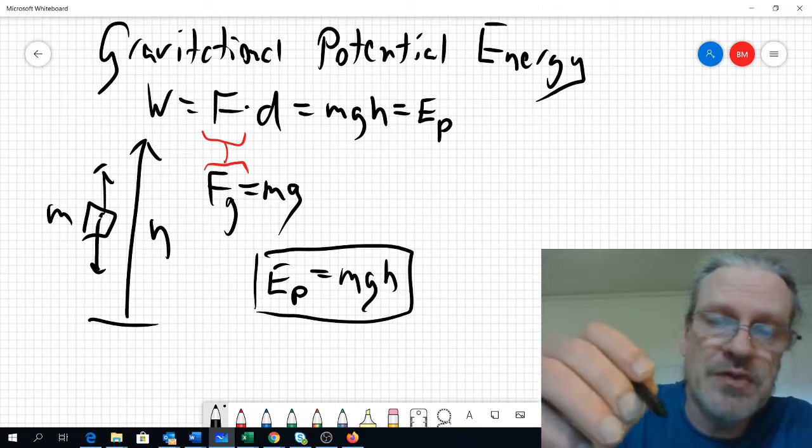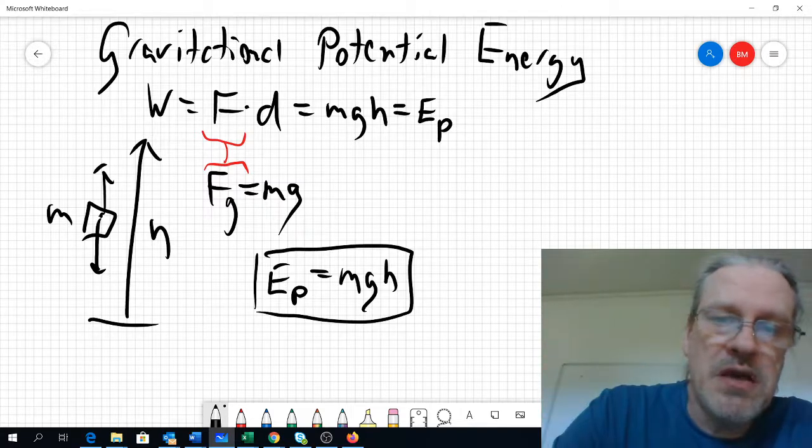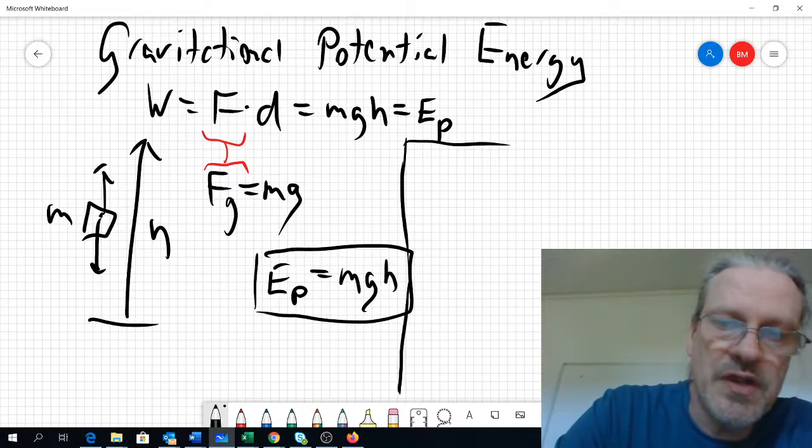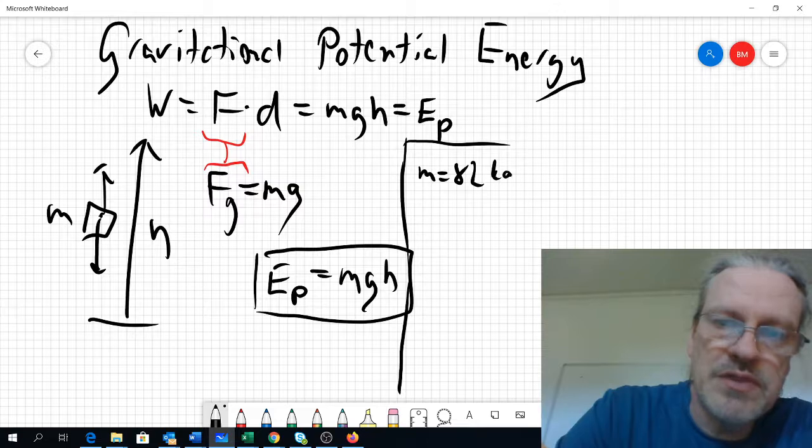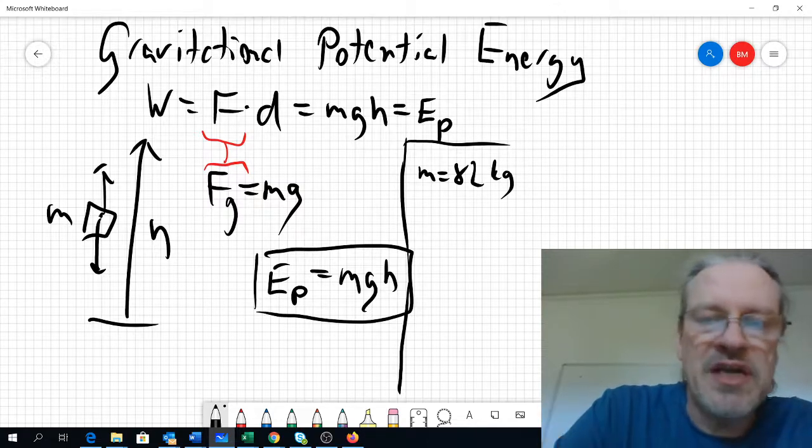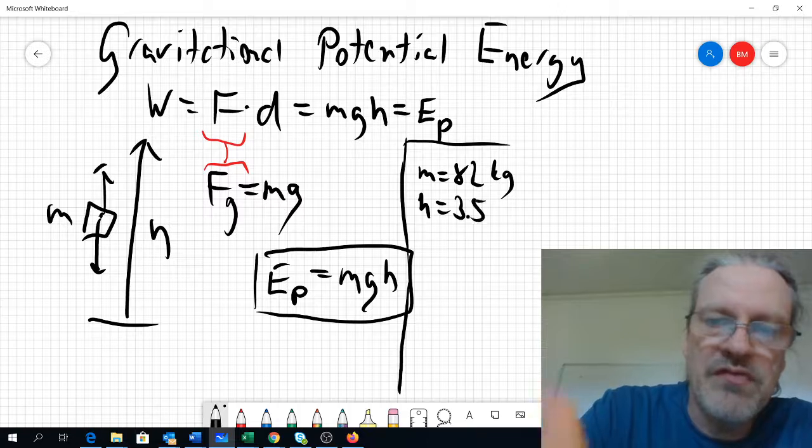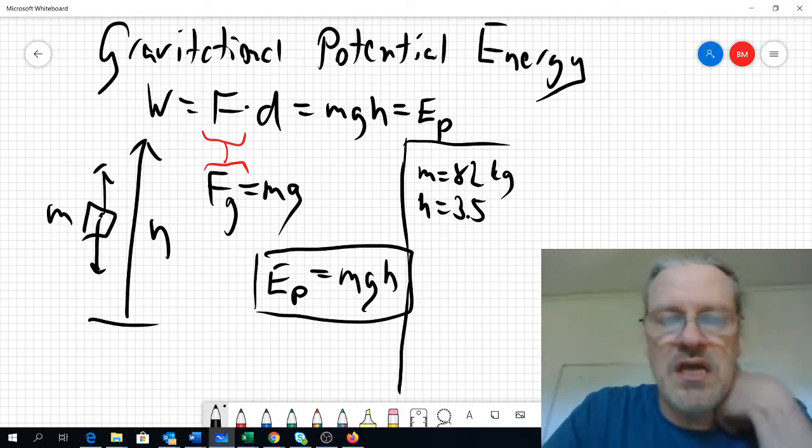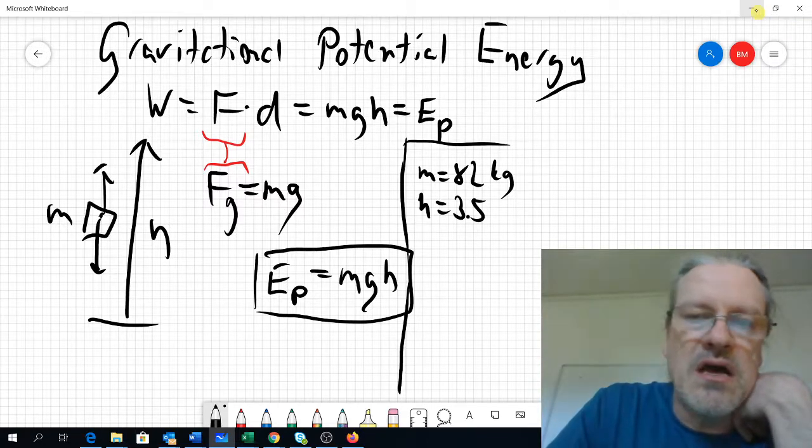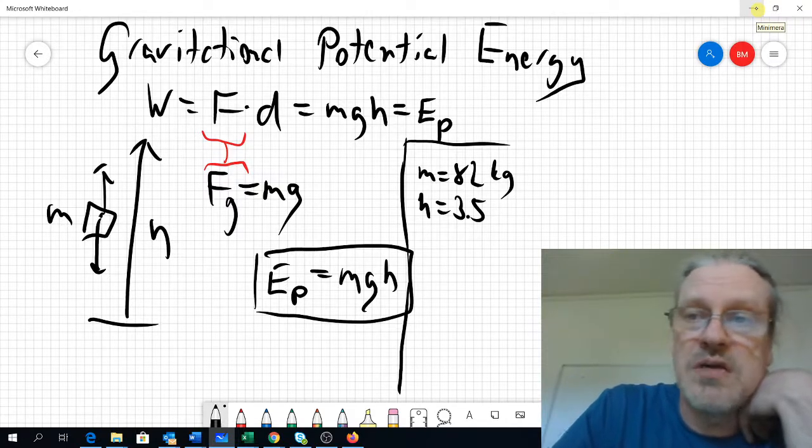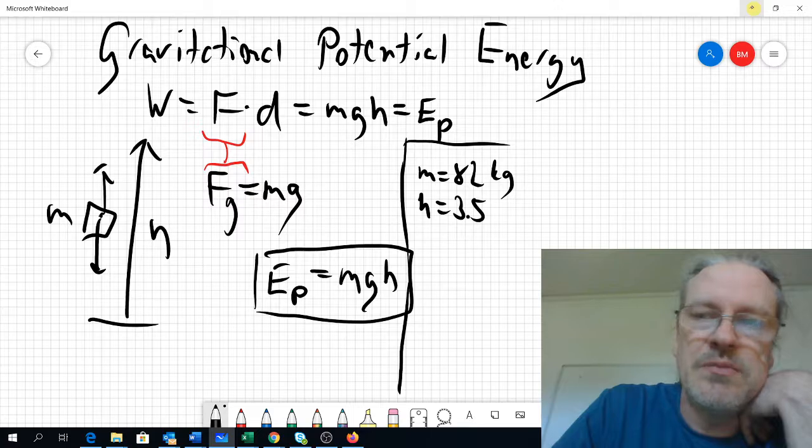If we imagine, for example, that my mass here is—let's just draw a little box over here. My mass is 82 kilograms, and say I walked up some stairs. The height is 3.5 meters. And the question is, how much potential energy will I add to my body? In other words, how much energy do I need to put into this?